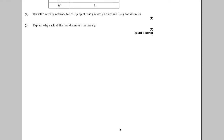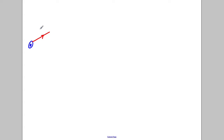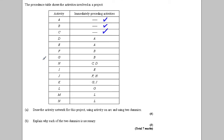We always start off at our source node, which we label zero. Now, looking at the table, A, B and C depend on nothing. So A, B and C can come out of this node. I'm going to put A there, B there, and lastly C there.